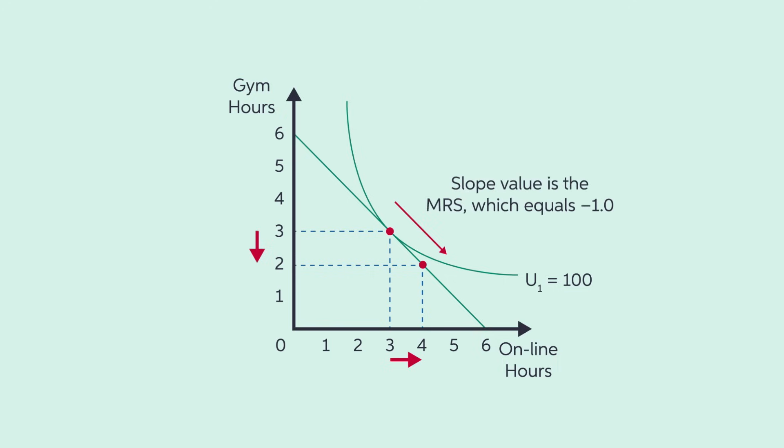However, the indifference curve reveals that Garrett would need to receive 2 additional hours of online time just to maintain the same level of utility. This tradeoff occurs at a slope value of minus 2, which is steeper than the minus 1 slope value of the budget constraint. Therefore, exchanging additional affordable gym hours for fewer online hours would decrease Garrett's utility level.